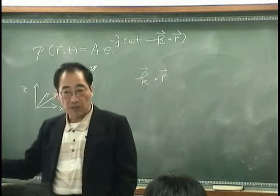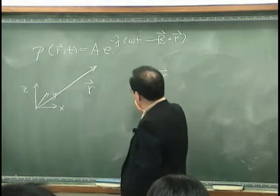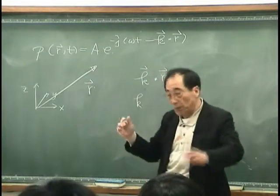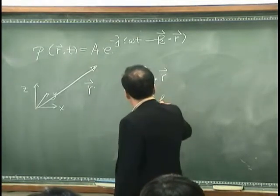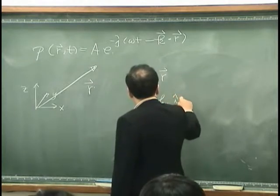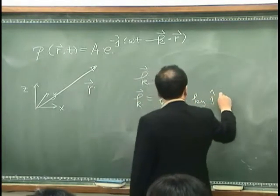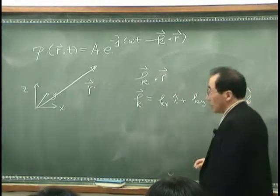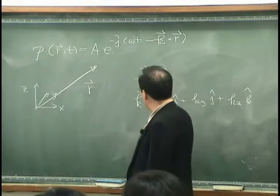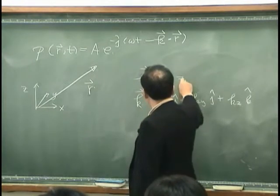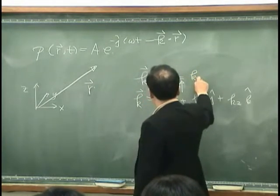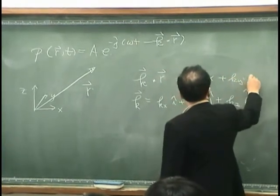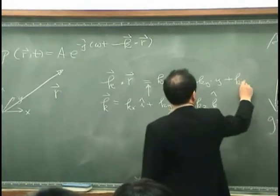What does it mean? If I decompose the K vector, it has an X, Y, and Z direction. K dot R simply means K_x times x, plus K_y times y, plus K_z times z.